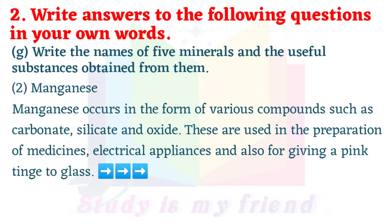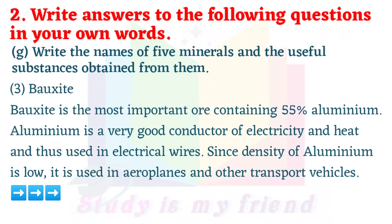2. Manganese: Manganese occurs in the form of various compounds such as carbonate, silicate and oxide. These are used in the preparation of medicines, electrical appliances and also for giving a pink tint to glass. 3. Bauxite: Bauxite is the most important ore containing 55% aluminium. Aluminium is a very good conductor of electricity and heat and thus used in electrical wires. Since density of aluminium is low, it is used in aeroplanes and other transport vehicles.